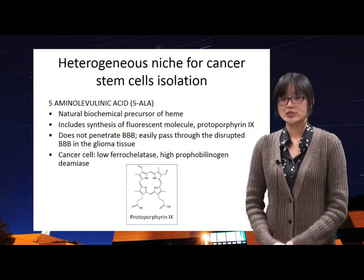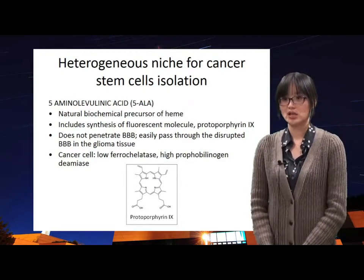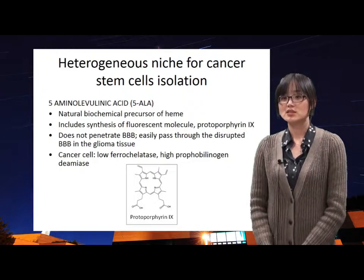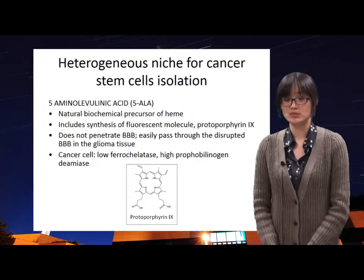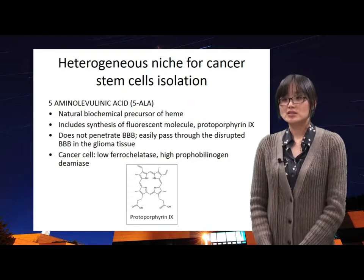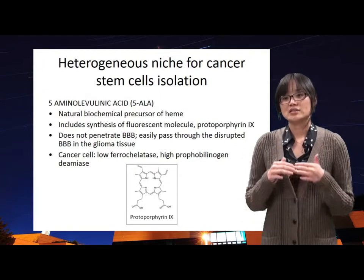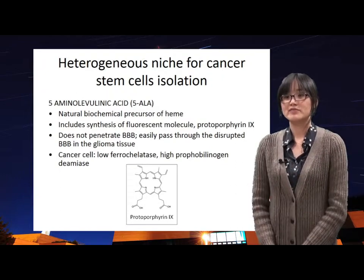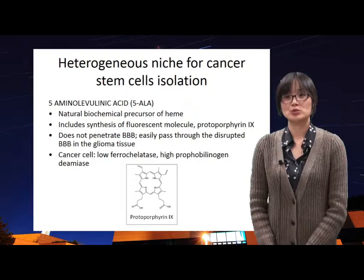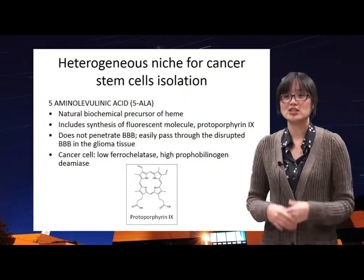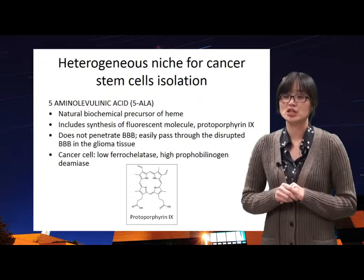Therefore, heterogeneity is the most important concept in this lecture. If we want to analyze stem cells in cancer, we need to get cancer tissue at the same site. To analyze more accurately, we can stain glioblastoma using 5-ALA dye. After staining, glioblastoma can be seen as red color whereas normal tissue can be seen as blue color.